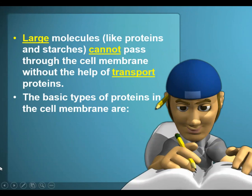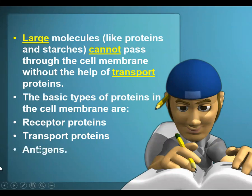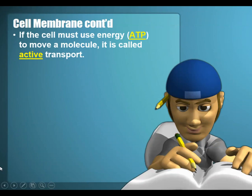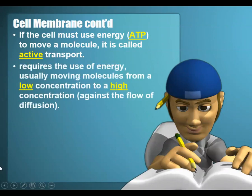The basic types of proteins in the cell membrane are receptor proteins, transport proteins, and antigens. If a cell has to use energy, like ATP, to move a molecule, it's called active transport, and it's usually moving it from a low to a high concentration — against the flow of diffusion — which is why we need energy to do it.